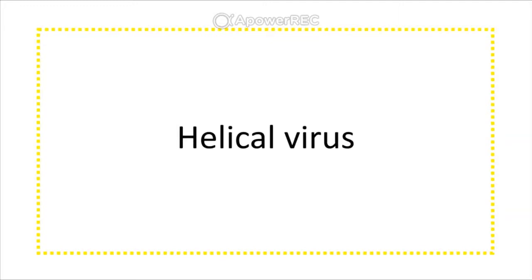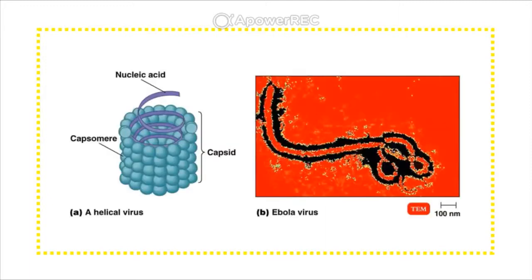Helical viruses, like the Ebola virus, are made up of capsomeres arranged in a helical structure — a sort of spiral structure like a staircase — that houses and protects the nucleic acid.